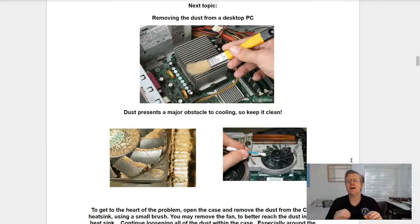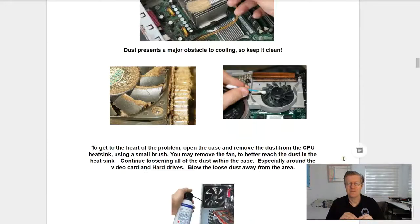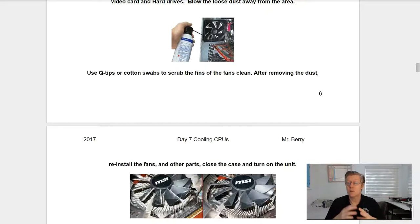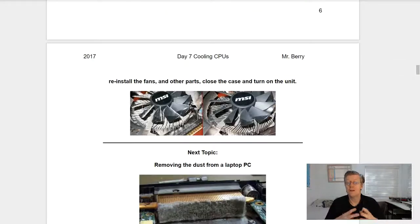Next topic, removing the dust from within the desktop PC. Dust presents a major obstacle to cooling. So keep it clean. To get to the heart of the problem, open the case and remove the dust from the CPU heat sink using a small brush. You may remove the fan to better reach the dust in the heat sink. Continue loosening all of the dust within the case, especially around the video card and your hard drives. Blow the loose dust away from the area. You may use q-tips or cotton swabs to scrub the fans clean after removing the dust. Then reinstall the fans and other parts. Close the case and then turn on the unit.